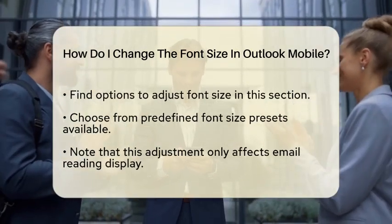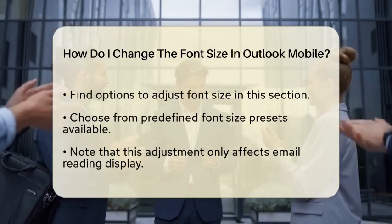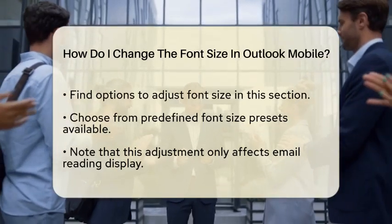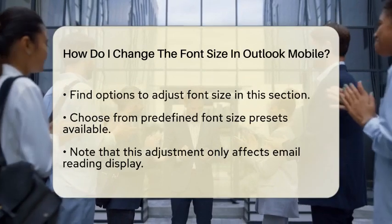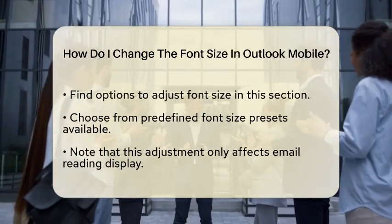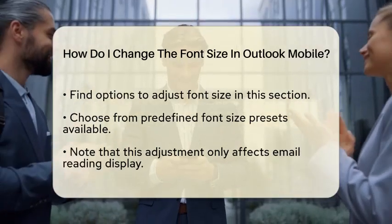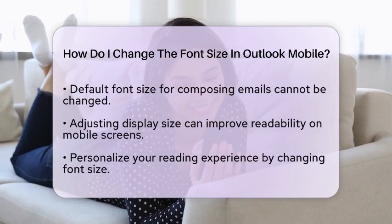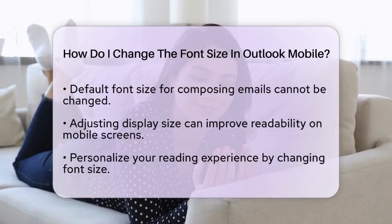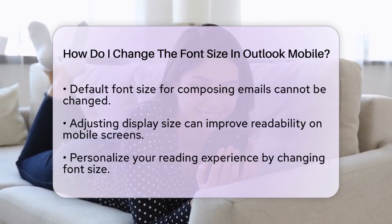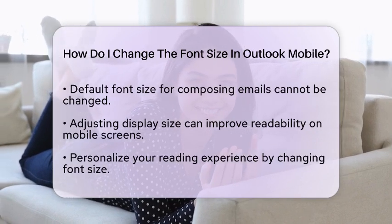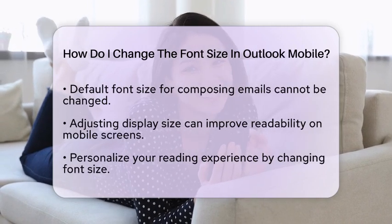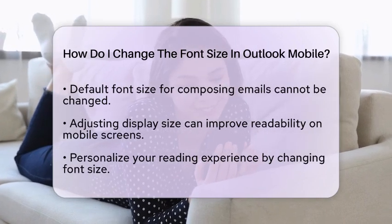Outlook Mobile provides a few predefined font size presets for you to choose from. Keep in mind that this adjustment affects how emails are displayed when you read them. Unfortunately, you cannot change the default font size for composing emails at this time. However, adjusting the display size for reading can significantly improve your experience, especially if you find the default text too small or too large on your mobile screen.